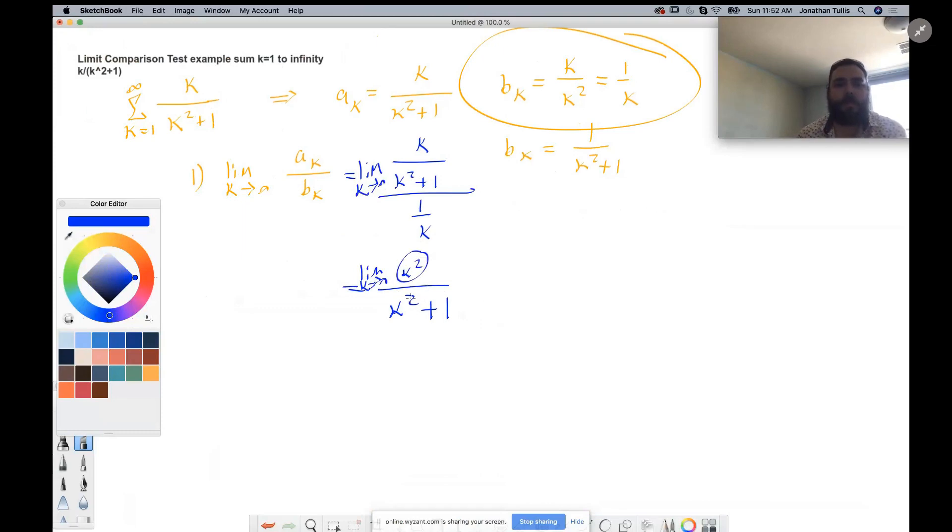So then here we see that this has the same power as this. So we just take the ratio of the coefficients or we can factor out. So let's factor out quick here. So then that's times one.